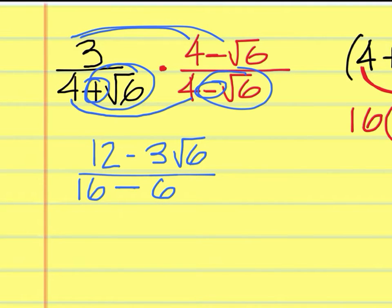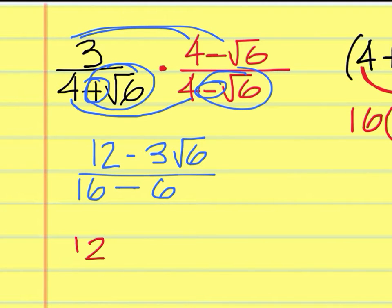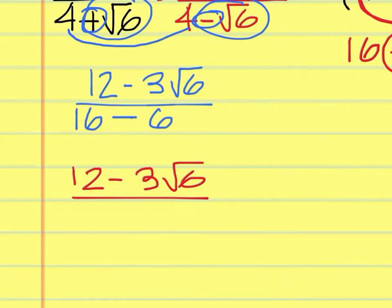You would only have to multiply this times this, and then this times this — every one of them — and remember it's going to be minus because you have alternating signs. So the top is 12 minus 3 square root of 6, and then on the bottom it's 16 minus 6, which is 10. Always simplify when possible. If you can factor a number out of the top terms, do so. But we can't here, so this is the final answer.